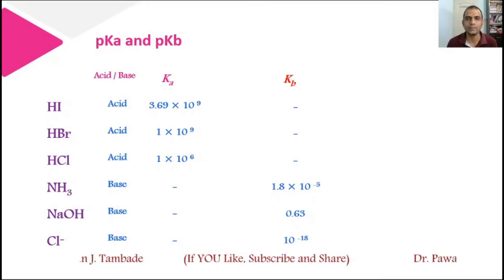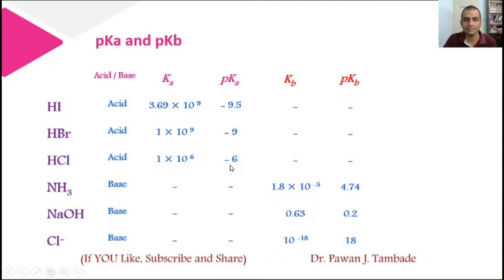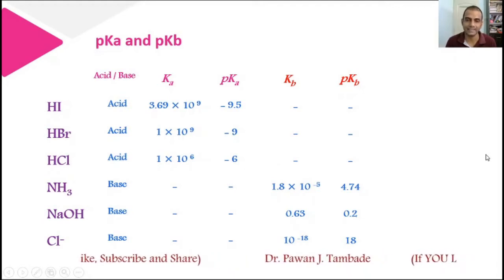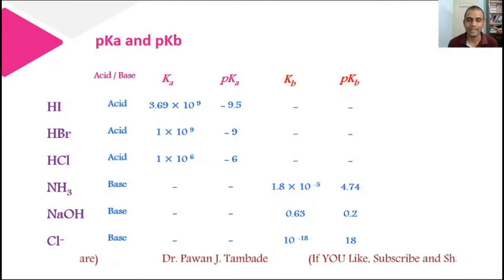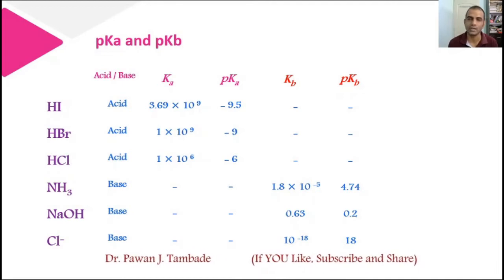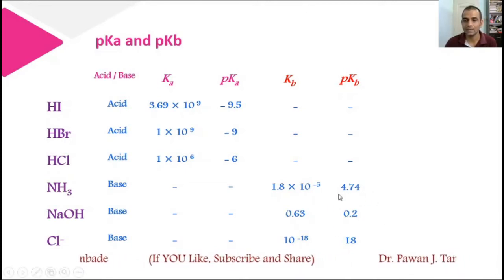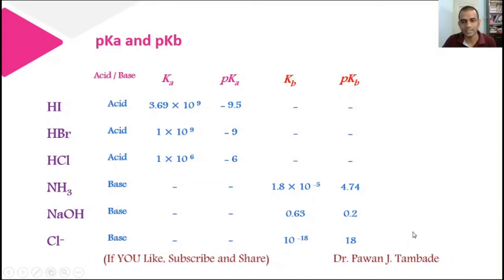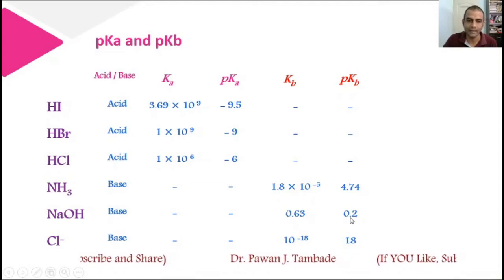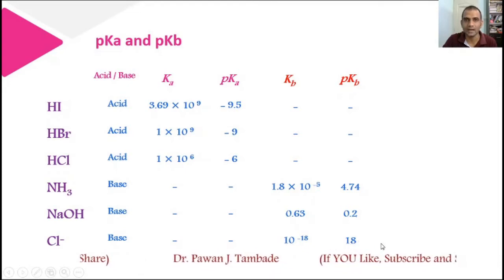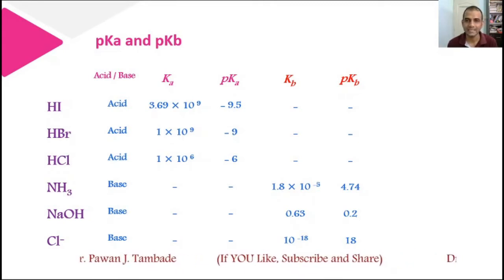Let's have a look at pKa and pKb values for these acids and bases. The pKa values of HI, HBr, and HCl are −9.5, −9, and −6. Since a lower pKa means higher acidity, HI with pKa of −9.5 is the strongest acid among the three. In the same way, from the pKb values of the bases NH₃, NaOH, and Cl⁻, NaOH is the strongest base because its pKb value is the lowest, and Cl⁻ is the weakest base as its pKb value is highest. This illustrates the relationship between acidity, Ka, pKa, and basicity, Kb, and pKb.